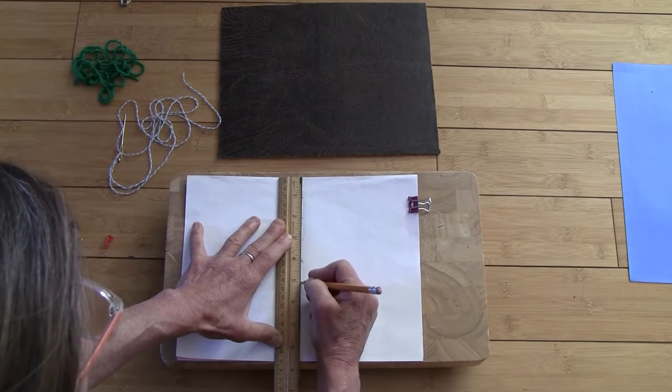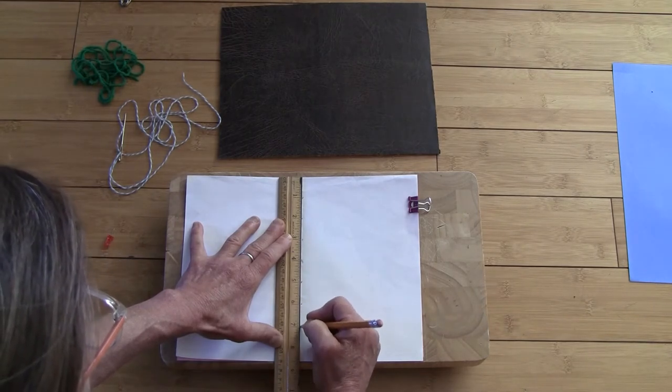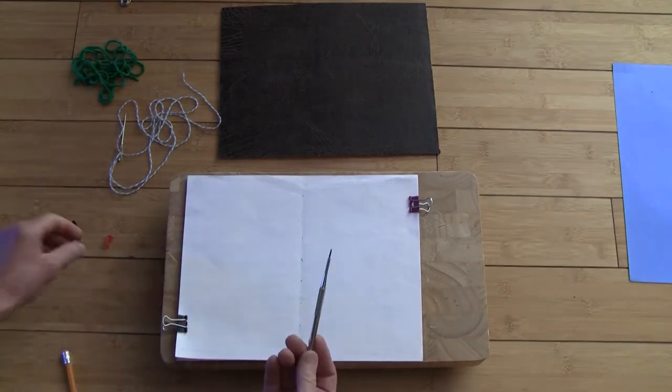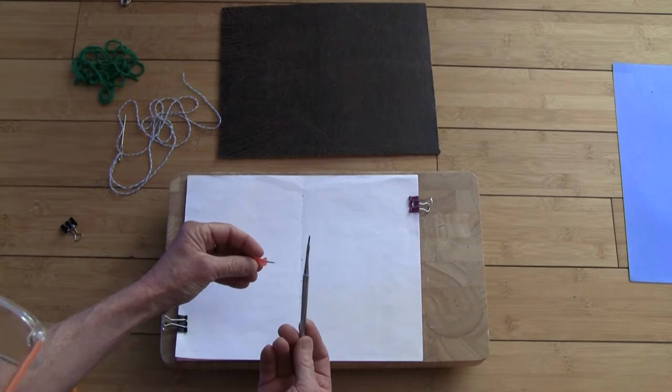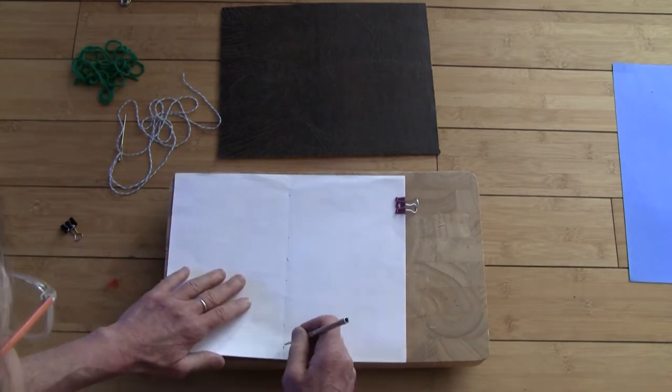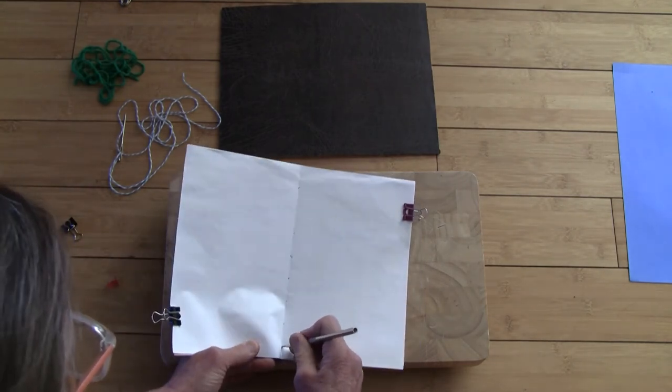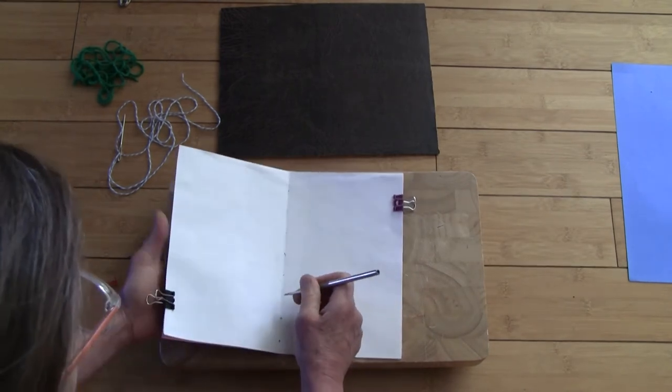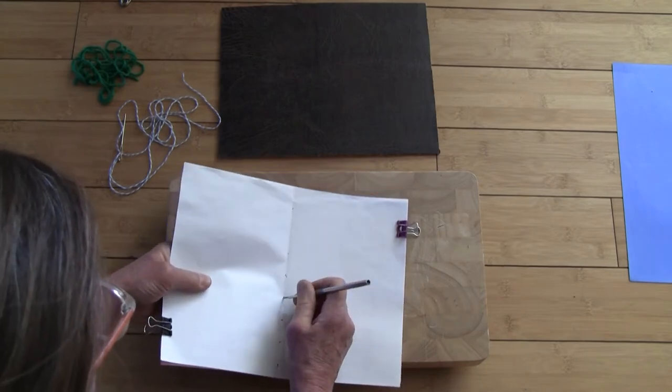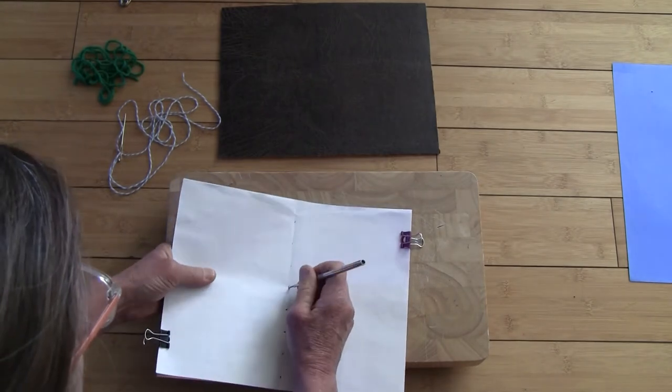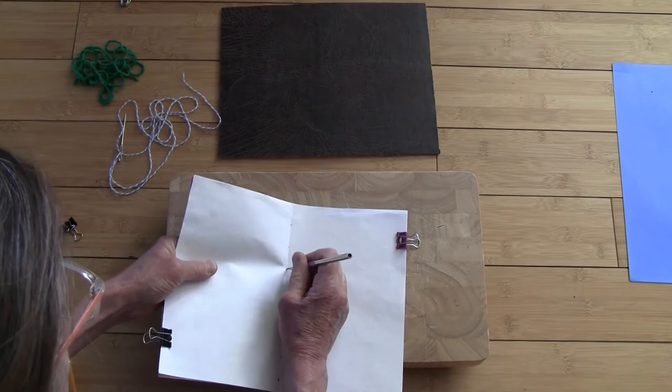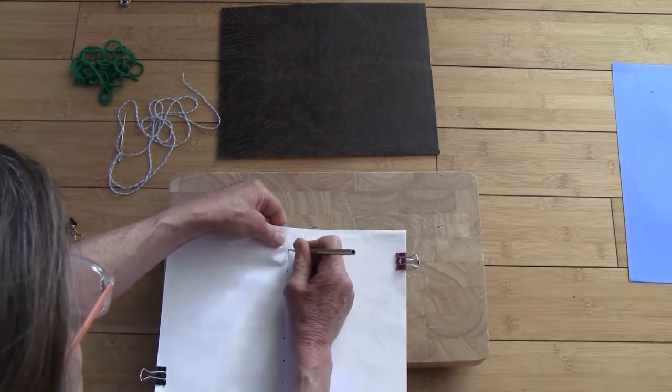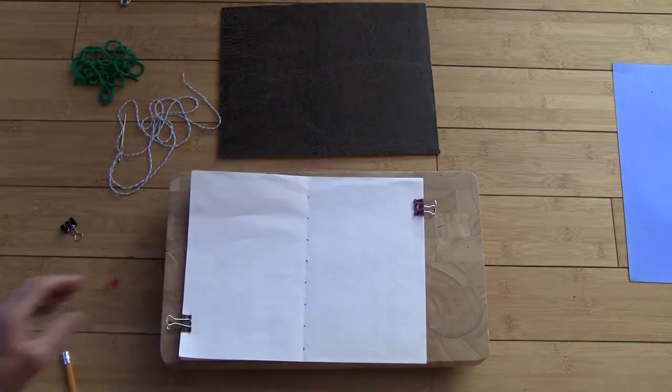So, every inch, I'm making a dot. Then, I'm going to take my sharp tool. If you don't have one of these, a thumbtack works as well. And I'm going to poke a hole through the mark that I made. So, now I've got some holes to sew.